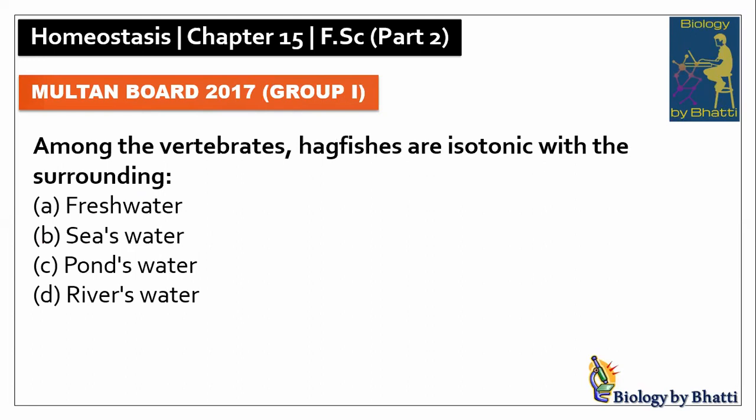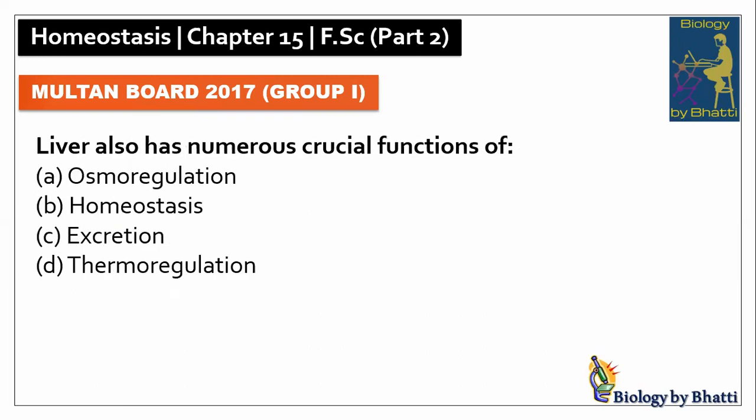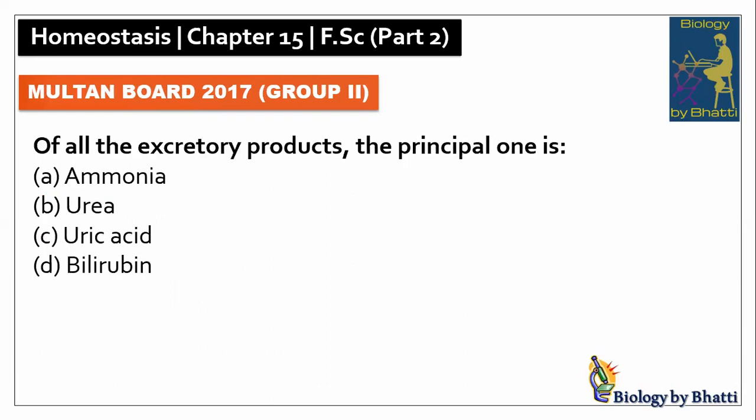Multan Board 2017 Group 1: among vertebrates, hagfishes are isotonic with the surrounding sea water — this is a textbook statement word for word — so the answer was B option. In this paper, liver also has numerous crucial functions of homeostasis, so the answer was B option — homeostasis.